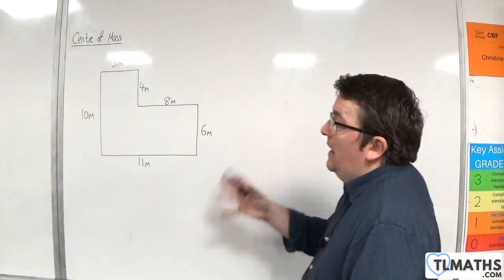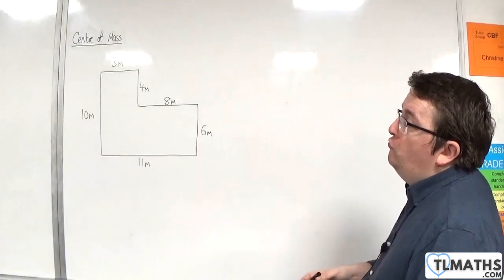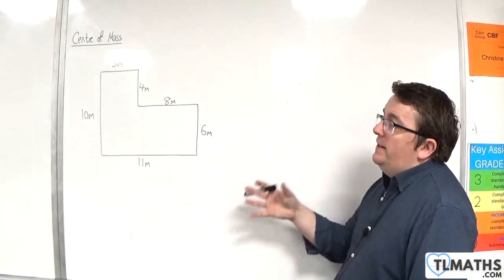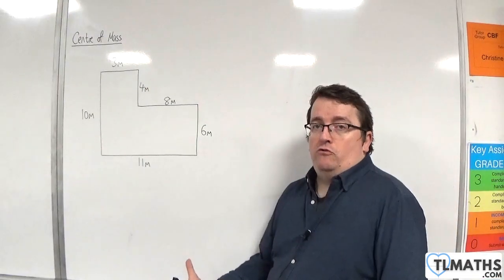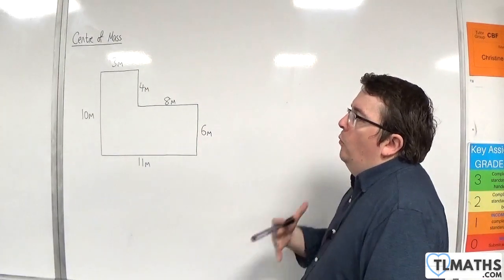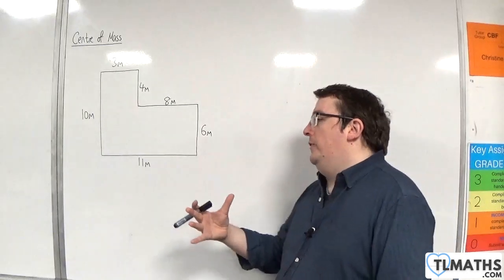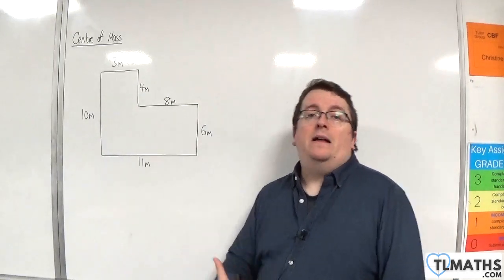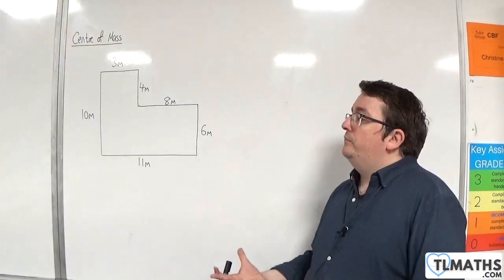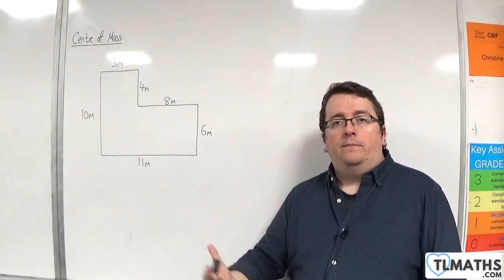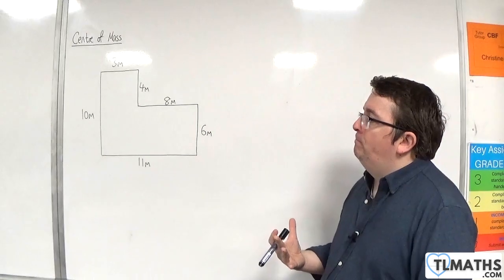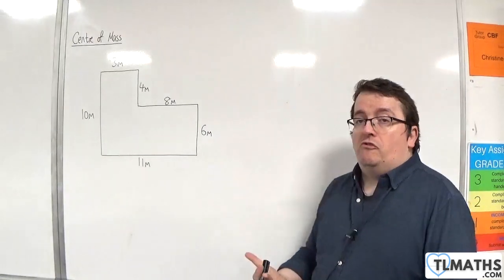In this video we have a laminar that is made from two rectangles. The two rectangles have been stuck together and they are made of the same material, so per square meter the mass will be the same. We'll take account of that in our calculation, and we need to find the center of mass.